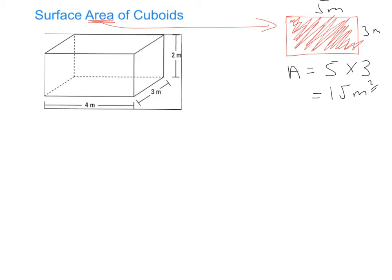Obviously a cuboid is a 3D shape, so this is where students get confused — they think it must be to do with volume, so they do length by width by height. But remember, we're not asked for volume; we're asked for surface area. So what we want to do is calculate the area of each of the faces of this 3D shape.